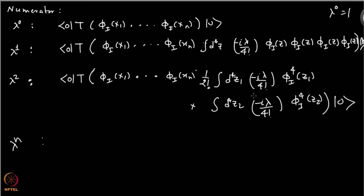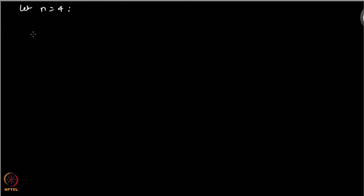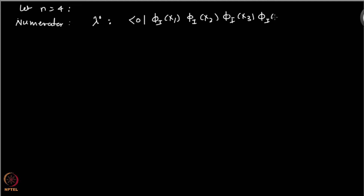So that is the numerator that we have, and we can use Wick's theorem now to convert this time ordered product to objects involving only contractions — only the Feynman propagators. So let us do that. Let us take n equal to 4. I am looking at one example and I look at the numerator for this case. At order lambda⁰ we have this object. Here all terms containing lambda do not contribute.